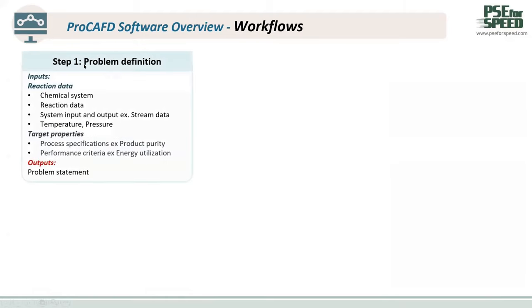Now let me tell you the input, the target the user needs to define, and the output the program generates in each step. In step one, the problem definition, the user needs to define the chemical system, the reaction data, the system input and output, and the temperature. Moreover, the user needs to define target properties such as process specification, process priority, product priority, and energy utilization. Then the problem statement will be created.